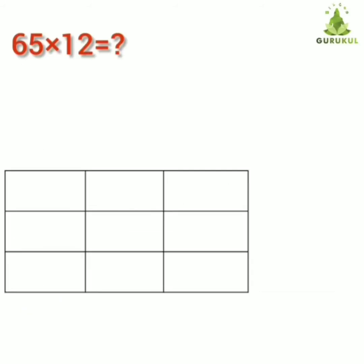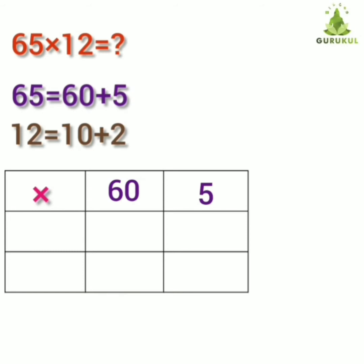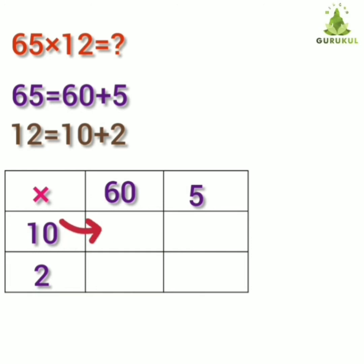Solve one more example: 65 multiplied by 12. First, write expanded form of 65: 60 plus 5. Expanded form of 12: 10 plus 2. Put multiplication sign. Write expanded form of 65, that is 60 plus 5, horizontally. Write expanded form of 12, that is 10 plus 2, to the left hand side. Start multiplication. Multiply 60 by 10 — that is 600. You can multiply 6 ones are 6 and put remaining two zeros.